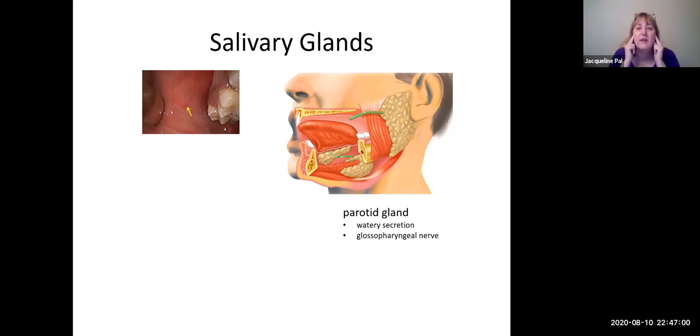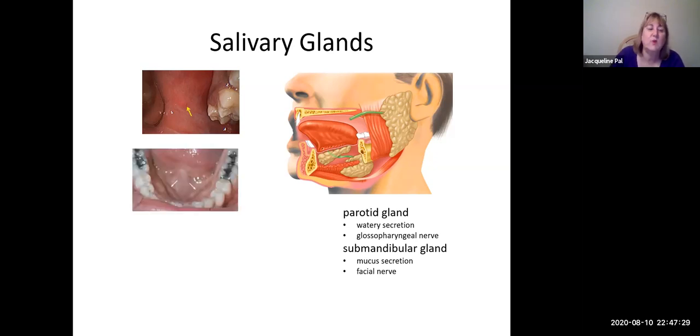For the next salivary gland, go down to the angle of the jaw and then just on the deep surface—so on the inside of the angle of the jaw where the ramus of your mandible is—this is where you would find the submandibular gland. And as opposed to the parotid, which is watery secretion, coming from the submandibular gland, this is very thick mucousy stuff, and it's secreted or stimulated by the facial nerve.